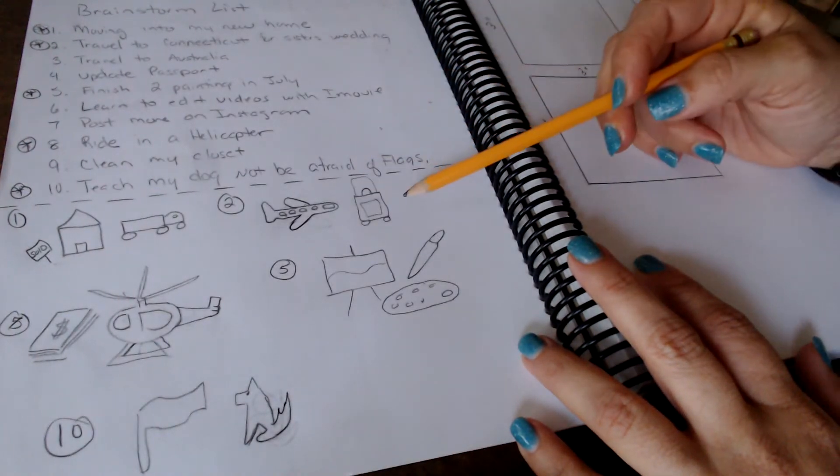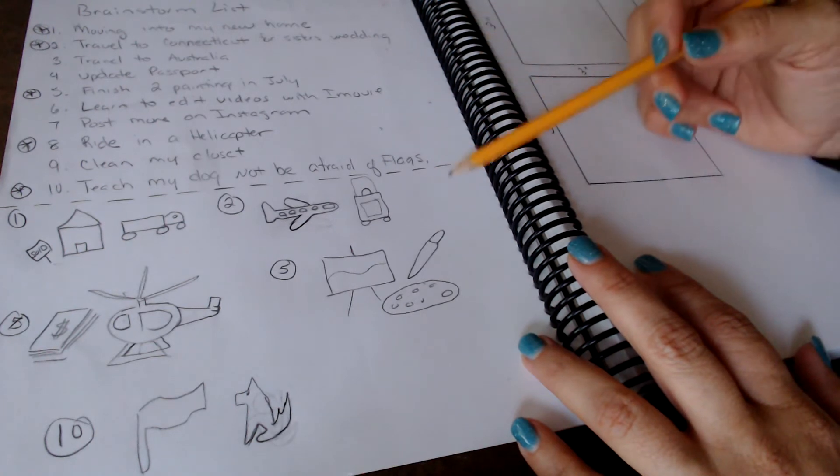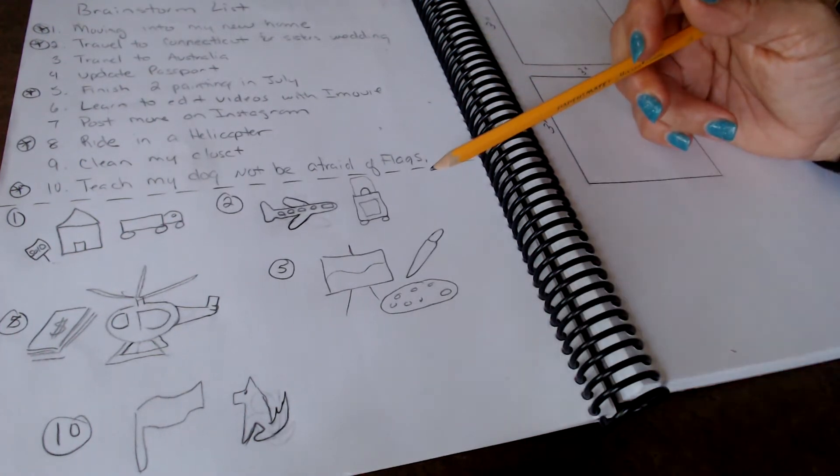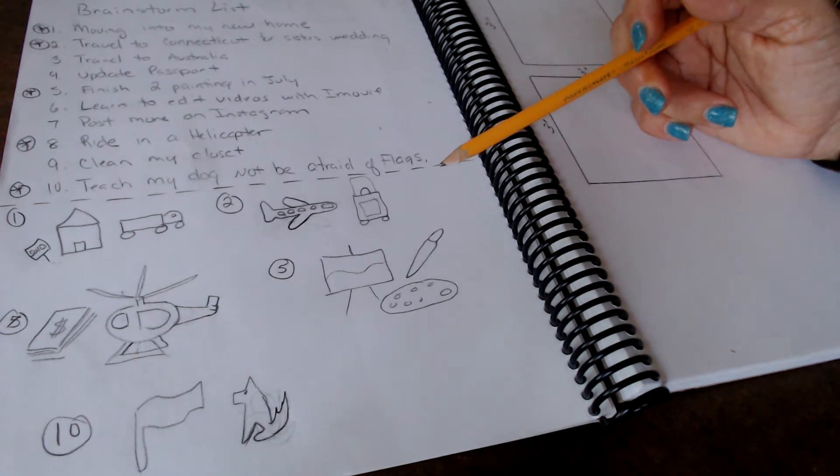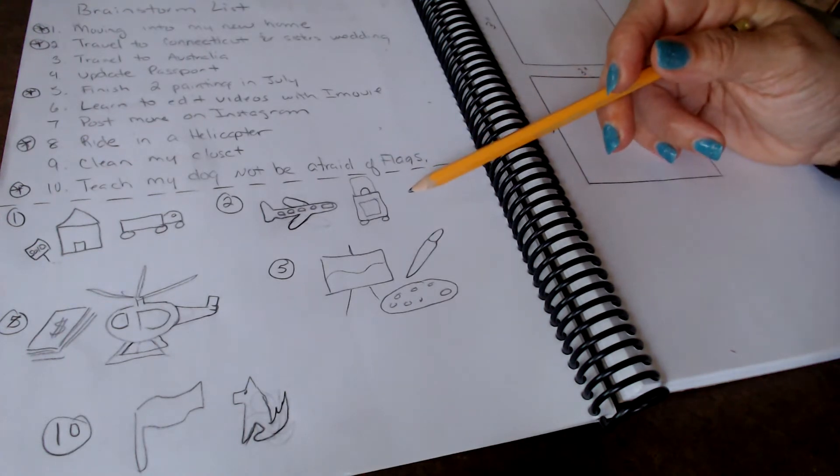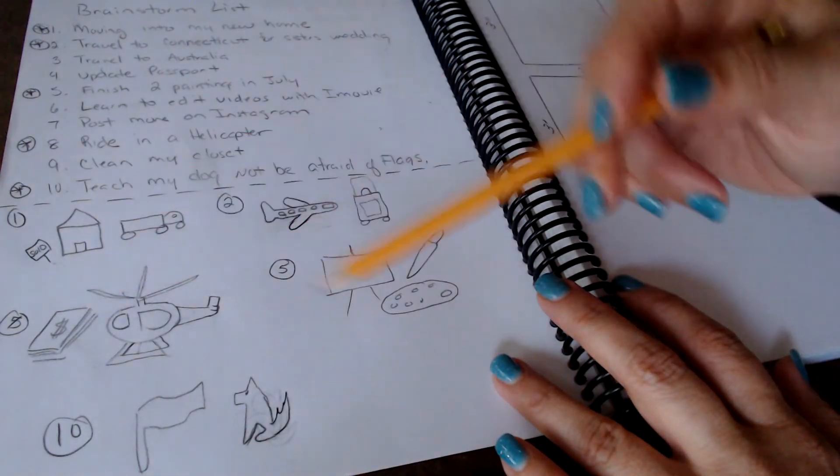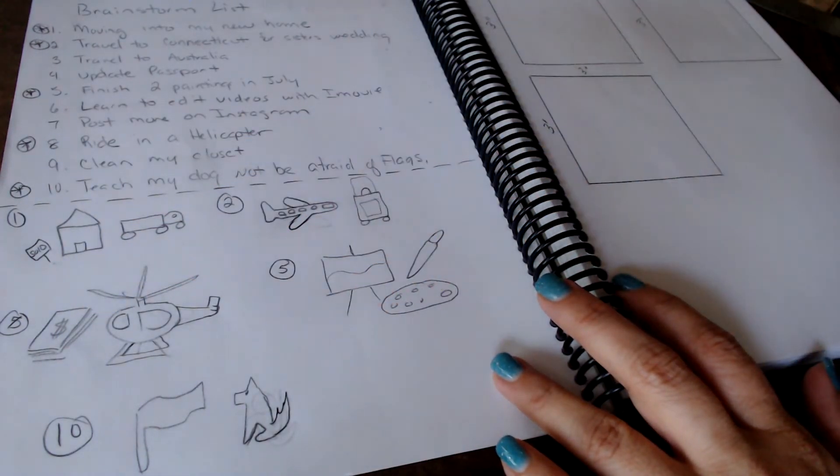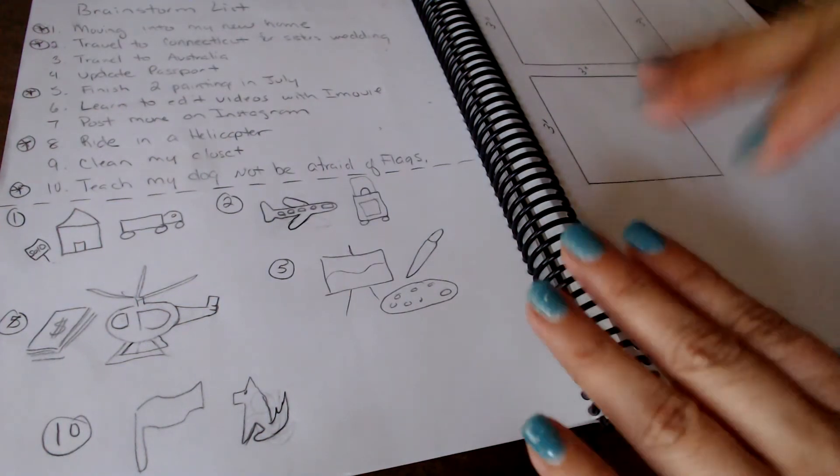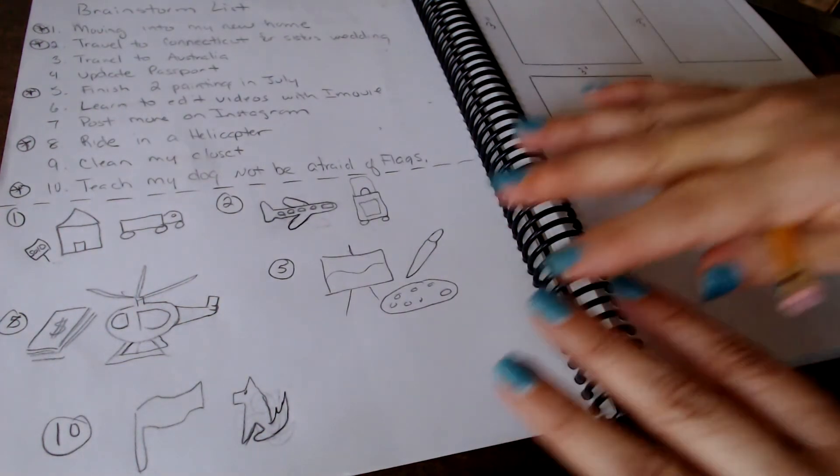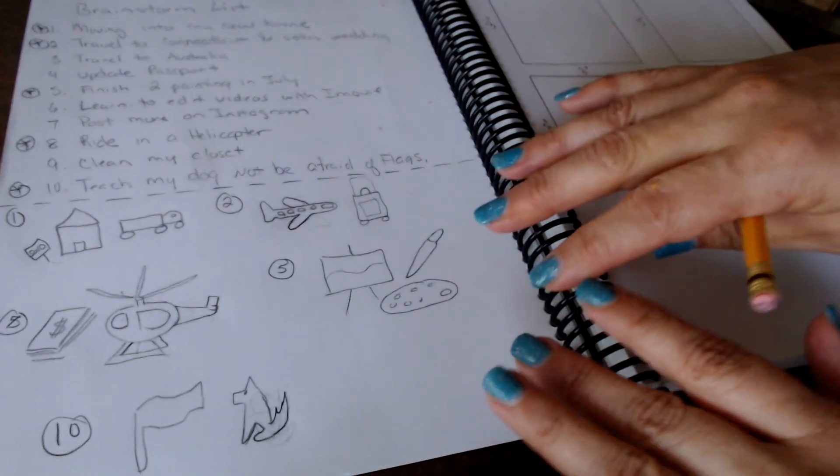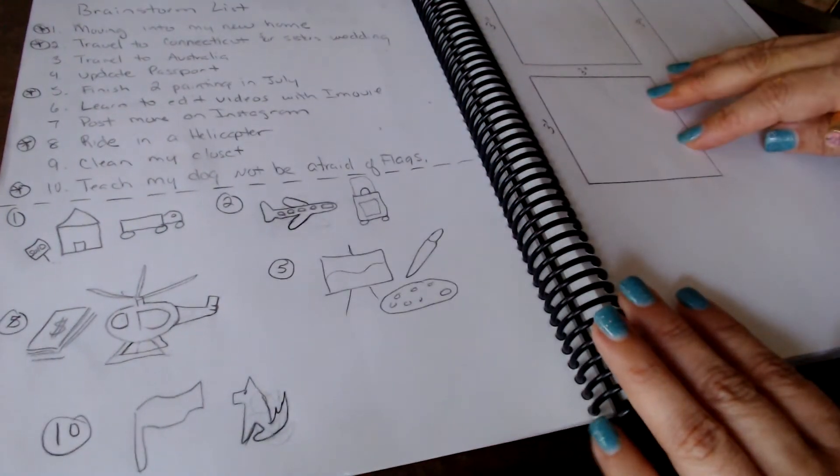Same thing with traveling to Connecticut - I did a plane and a suitcase. I could have done a Connecticut flag, I could have done clams because clams are big in Connecticut. There's lots of things I could have done but I chose the plane and a suitcase. Same thing for all of these - the money for the helicopter ride because it's expensive. There's not a right or wrong as long as you have enough images that you have interesting shapes to pull from when we get into our thumbnails.